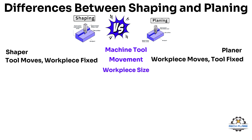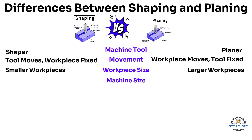Size of the workpiece: Shaping is used for smaller workpieces with intricate details, while planing is used for larger workpieces. Size of machine: The shaper is traditionally a small machine, preferred for smaller jobs, while the planer is a larger machine and can accommodate heavier and larger jobs.